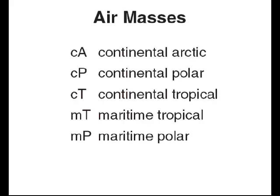Air mass names either start with continental or maritime. If it starts as continental, it means that air mass formed over land — continents. And if it formed over land, it tends to be dry. So whenever you see the C to start off an air mass name, that tends to be dry air.